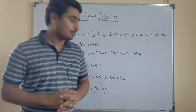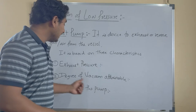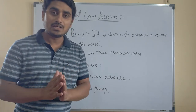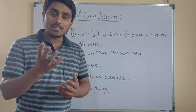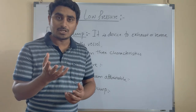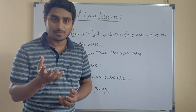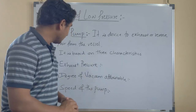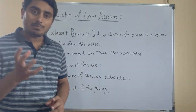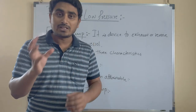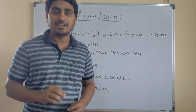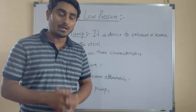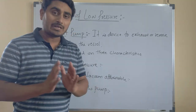The next characteristic is the degree of vacuum attainable. It is defined as the minimum pressure in the vessel when the pump is connected to the vessel. It mostly depends upon the exhaust pressure.